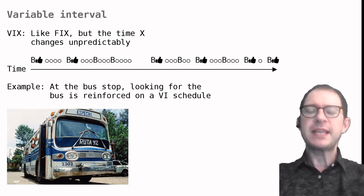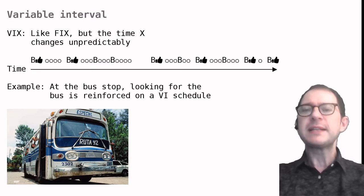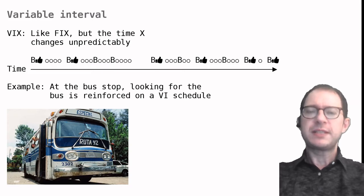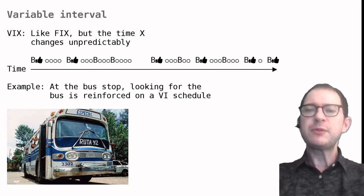A good example of VI scheduling in everyday life occurs at the bus stops. Imagine that the bus arrival times are unpredictable. This is often the case in big cities. At the bus stop, people often try to spot the bus arriving in the distance. This looking behavior is rewarded by the sight of the bus. This reward is on a VI schedule because the time one waits varies every time we go to the bus stop and because the behavior of looking has no influence on the bus arriving. Still, we do it because it is occasionally rewarded by the sight of the bus.